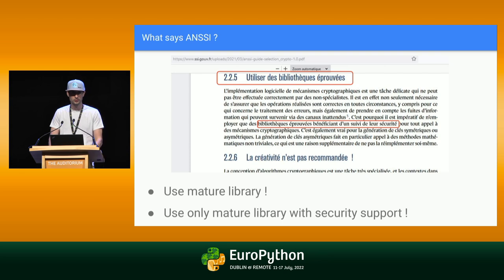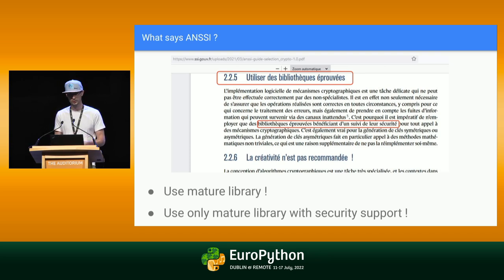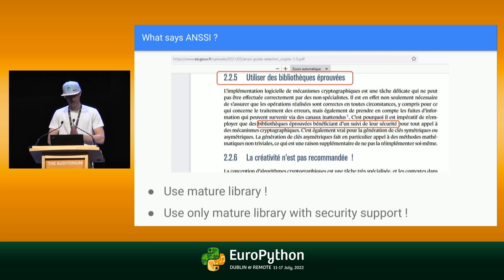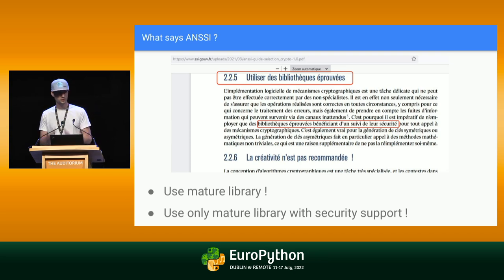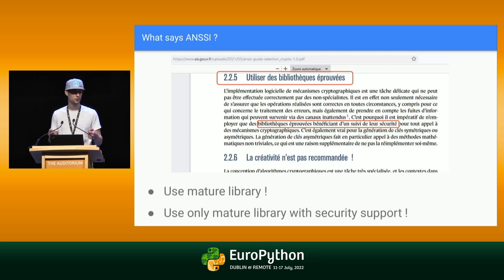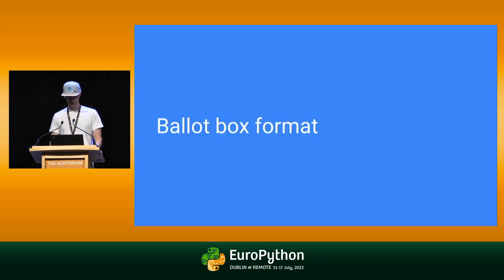ANSSI in France is the organization responsible for saying what you should and shouldn't do in computing security. They give really good advice — when they say something, you should listen. What they say is: you must really please use mature libraries, libraries written by experts, and libraries with security support. It's really important because it's really simple to have something broken in security and cryptography that you don't know is broken.